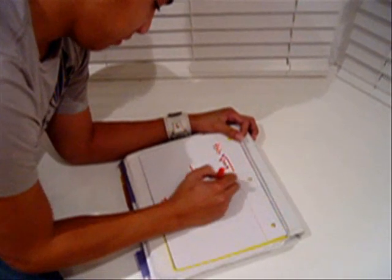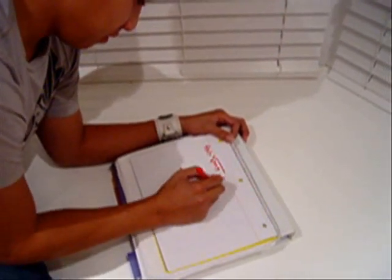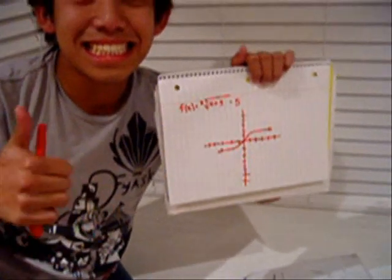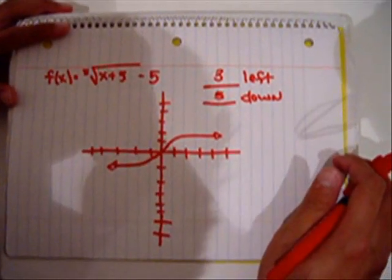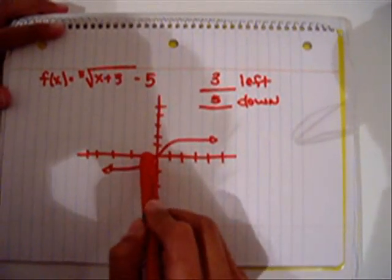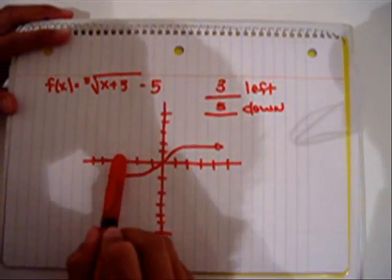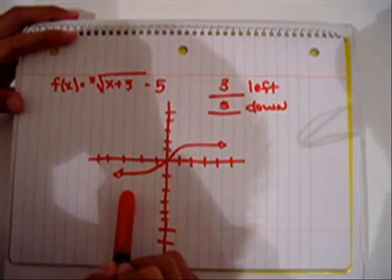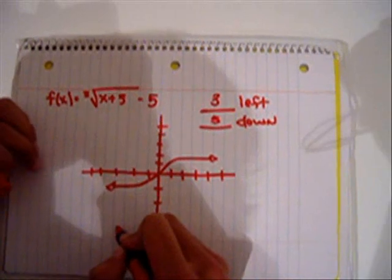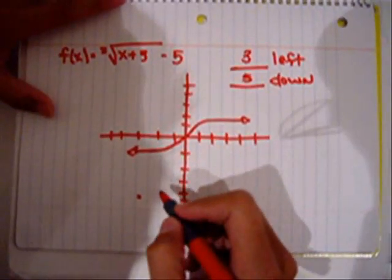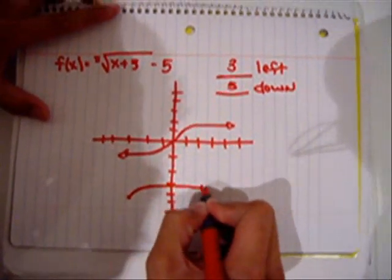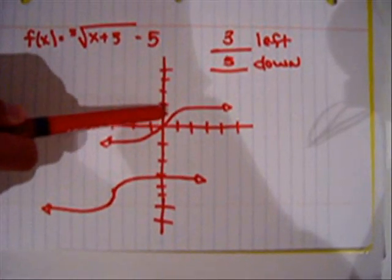Starting with the equation: cube root of x plus 3, minus 5. Now we're going to do the shifting part — count it out with me: 1, 2, 3... 1, 2, 3, 4, 5. Good job. Now with this point, we can make the graph. This is the final shift of the graph.